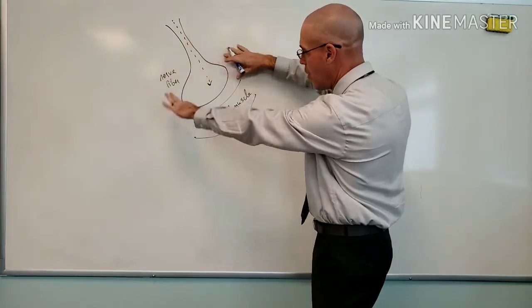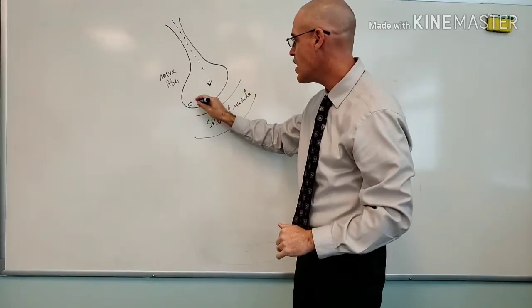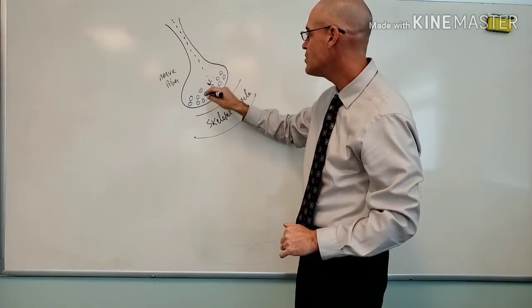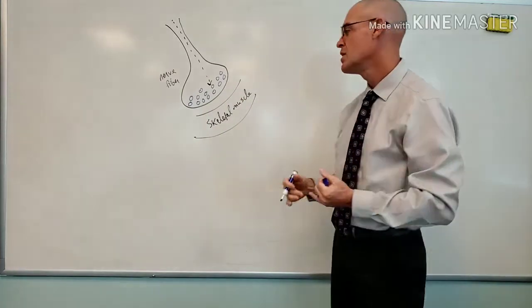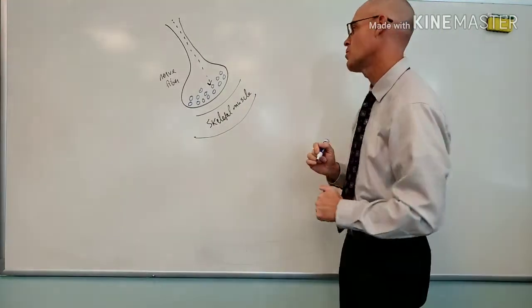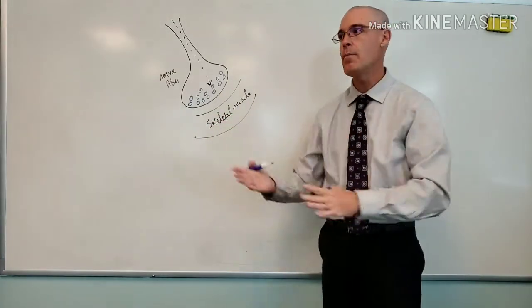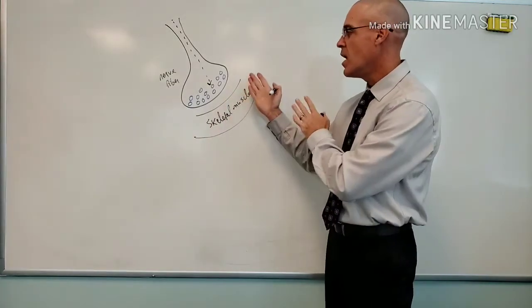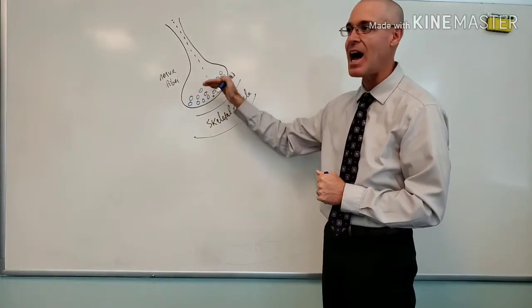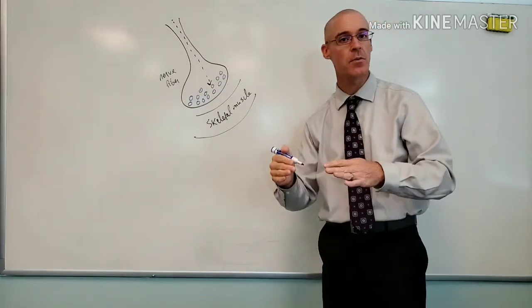The nerve fiber has a bulge at the distal end called the synaptic knob. Inside the synaptic knob are vesicles filled with a special chemical — not a hormone, not a paracrine — it is a neurotransmitter. What makes it a neurotransmitter is the fact that it is involved in a synapse, crossing the synapse. That's what distinguishes it from other chemicals.